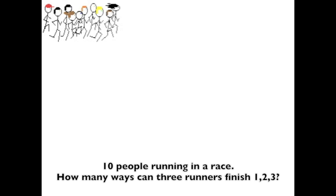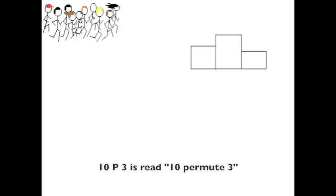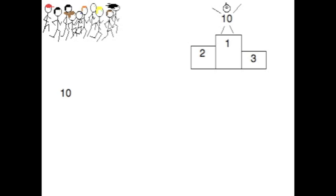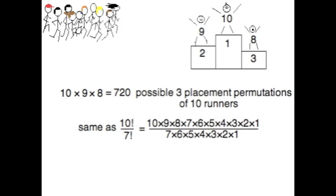A permutation without repeating: 10 people running in a race. 10P3 is the number of ways you can have first, second, third place. That's 10 for the first spot, nine for the second, eight for third — that's 10 factorial over 7 factorial. You've counted every case.